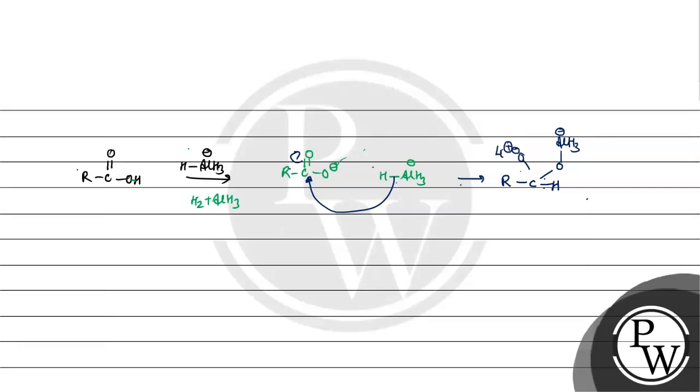This O minus will give this electron density to aluminum. So this species basically will form. Then what will happen? This electron density will come and this species will become aldehyde.